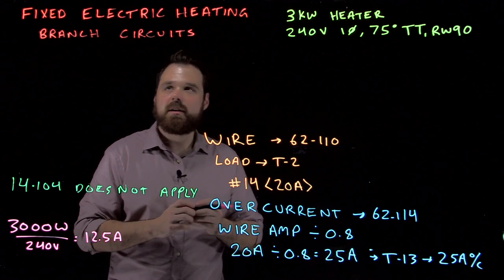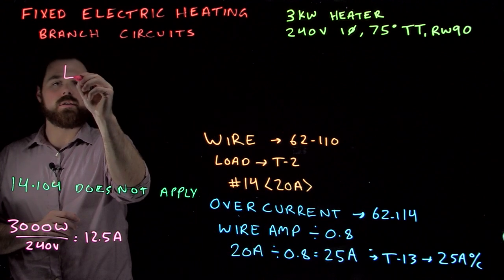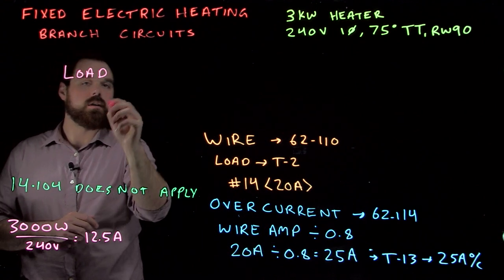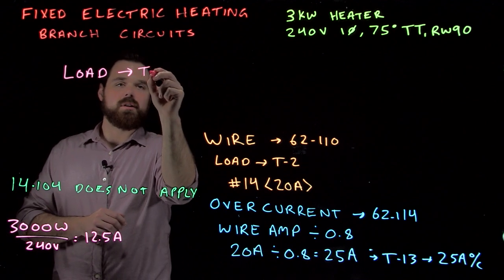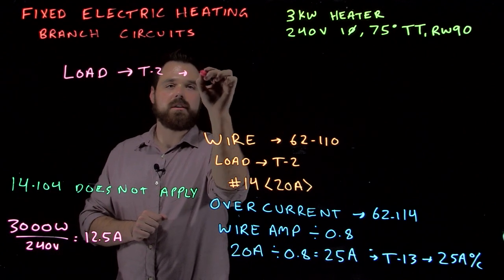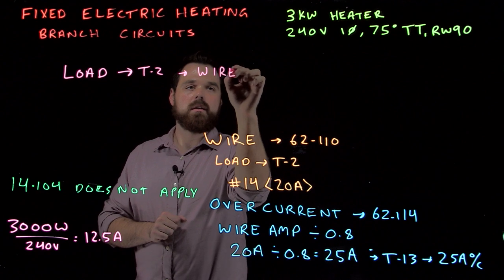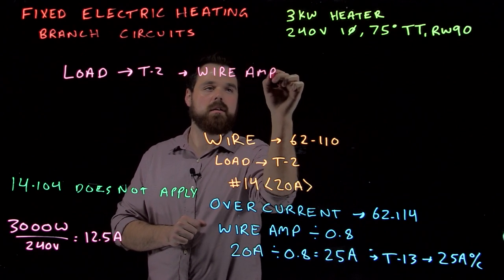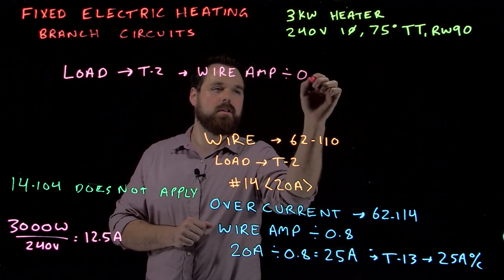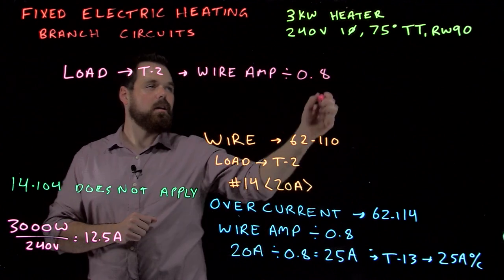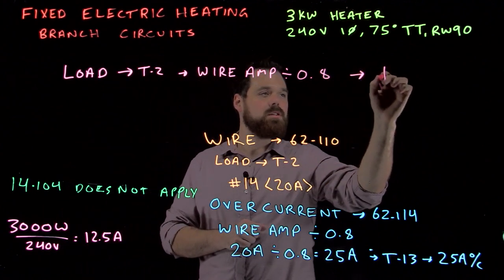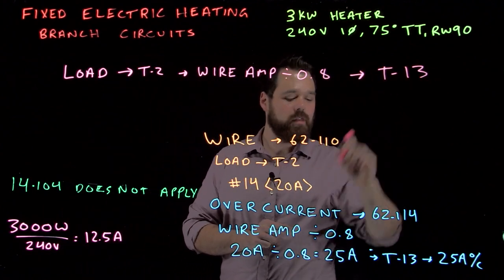So just a quick recap, you are going to take your load directly to table 2. Then you are going to take your wire ampacity divide by 0.8 and you are going to take that number to table 13.